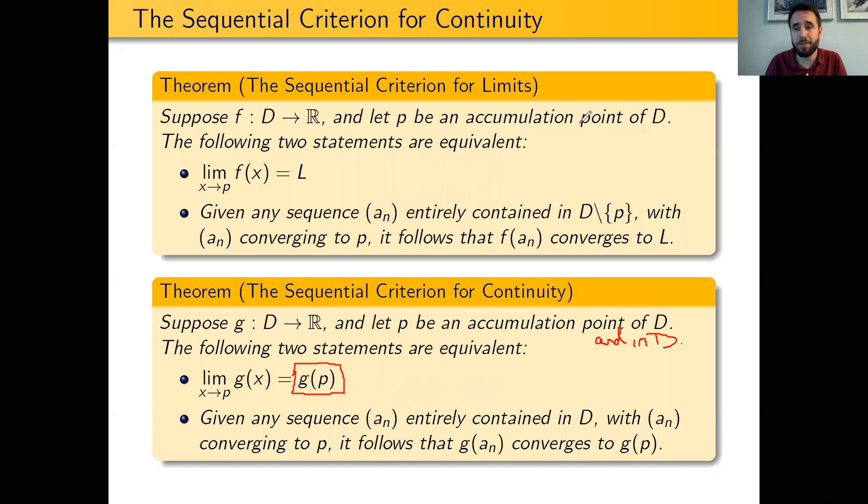And because these two statements are so similar, you can imagine that the proofs of the two statements are also very similar. And that is absolutely the case. If we wanted to prove the sequential criterion for continuity, we would follow basically the same steps that we did in proving the sequential criterion for limits.